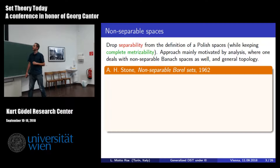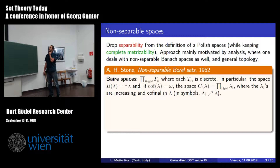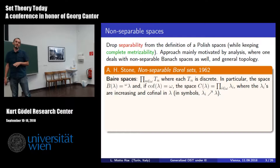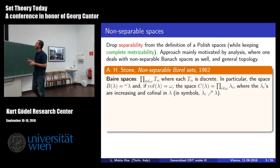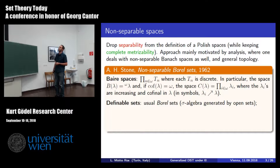I pick one specific paper using this approach—a paper by Stone, very old—in which he considers what he calls Baire spaces, which are just countable products of discrete spaces. Most notably, he concentrates on the countable product of a set of a certain size lambda with the discrete topology, or when lambda has cofinality omega, he picks a cofinal sequence in lambda and makes the product of that cofinal sequence. This is a natural generalization: when lambda equals omega, these are exactly the Baire space and the Cantor space, more or less.